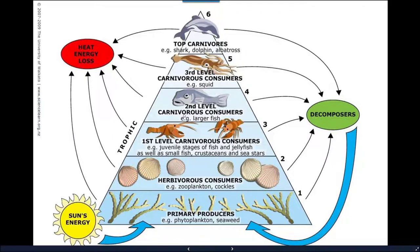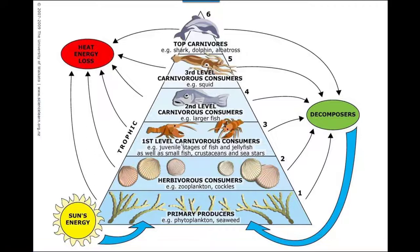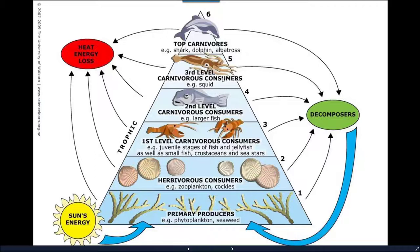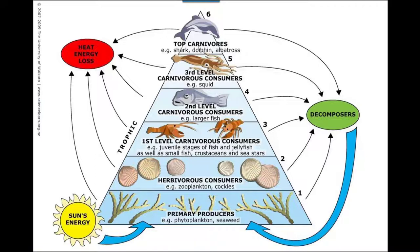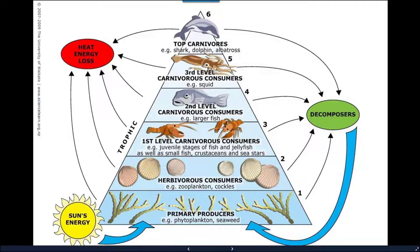Above that, you have secondary level carnivorous consumers that predominantly feed on first level carnivorous consumers. Just above that are third level carnivorous consumers, feeding on the second and sometimes first level. At the very top of the pyramid are apex predators or top carnivores — organisms such as sharks, dolphins, and seabirds — which feed on those third level carnivorous consumers.